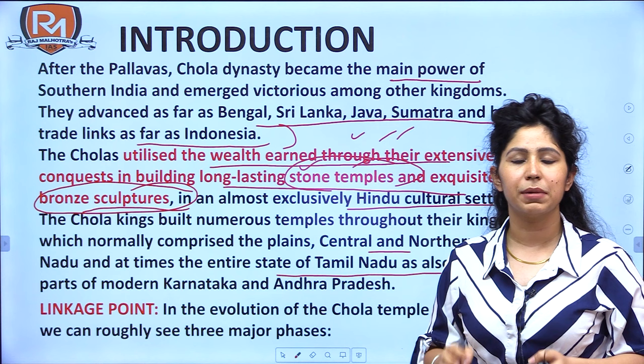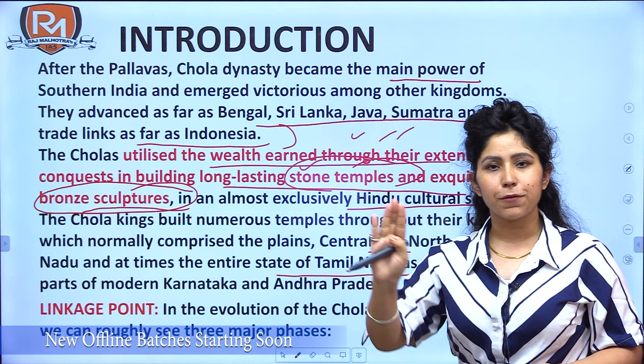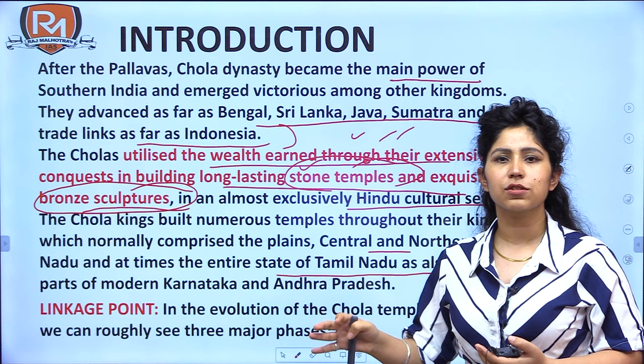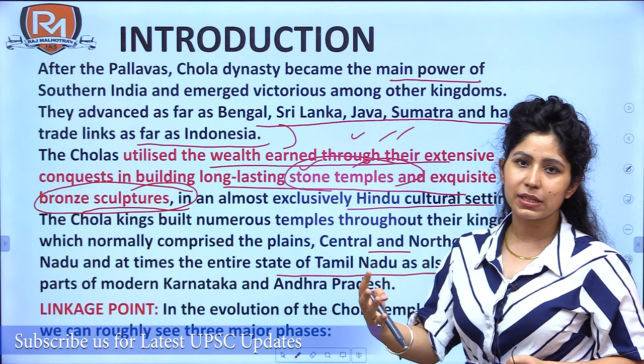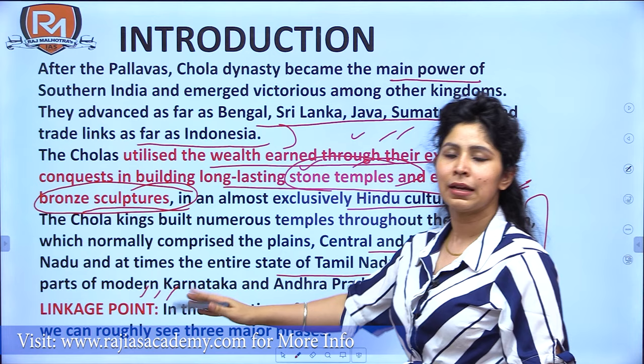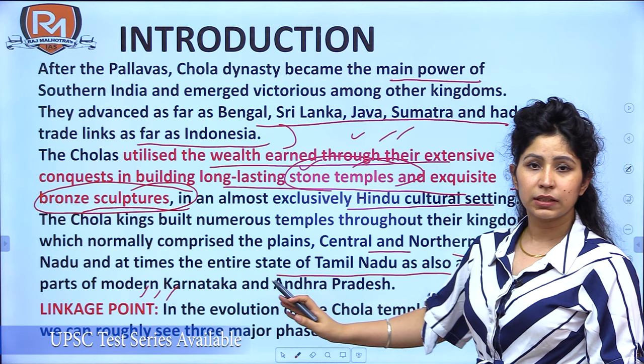Architecture under the Cholas occurred in three phases: the early phase, the middle or medieval phase, and the later phase. The middle phase under Raja Raj Chola I is very important and we will emphasize it a lot. The first phase was influenced greatly by the Pallavas, the last phase was influenced somewhat by the Chalukyas and saw some decline. As the linkage into the next section, you can say: 'In the evolution of Chola temple architecture, we can roughly see three major phases.'